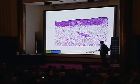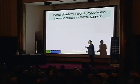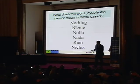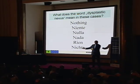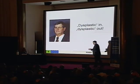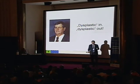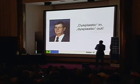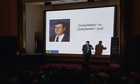What does the word dysplastic nevus mean in these cases? To make it perfectly clear: it means nothing — niente, nulla, nada — because it doesn't mean that the lesion has a higher chance to develop into a melanoma. David Weedon framed it this way: 'dysplastic in, dysplastic out.' If the clinician writes down dysplastic nevus, no matter what the pathologist sees, it comes back as dysplastic nevus. It means nothing.